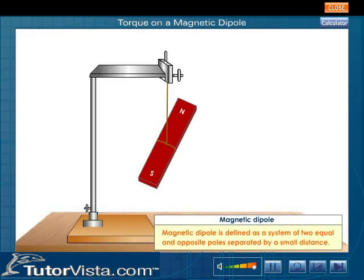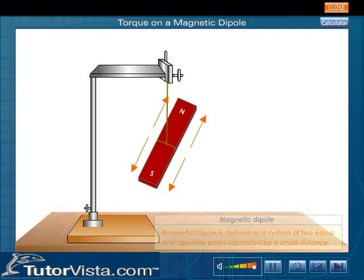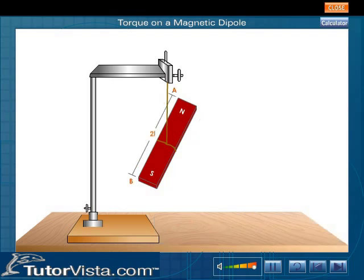Magnetic Dipole is defined as a system of two equal and opposite poles separated by a small distance. The figure shows a Magnetic Dipole AB having North and South poles respectively, each of strength M separated by a small distance 2L.